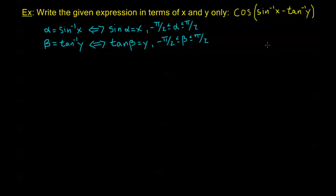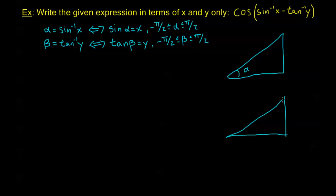Now the first thing we need to do is make triangles. Before, in the chapter 6 version, we only made one triangle, but here we're going to need to make two — one for alpha and one for beta. For my alpha triangle, since sine of alpha equals x, the opposite side is x, the hypotenuse is 1, and the adjacent side is the square root of 1 minus x squared. For my beta triangle, tangent of beta equals y, so opposite over adjacent is y over 1, and the hypotenuse is the square root of 1 plus y squared by the Pythagorean theorem.